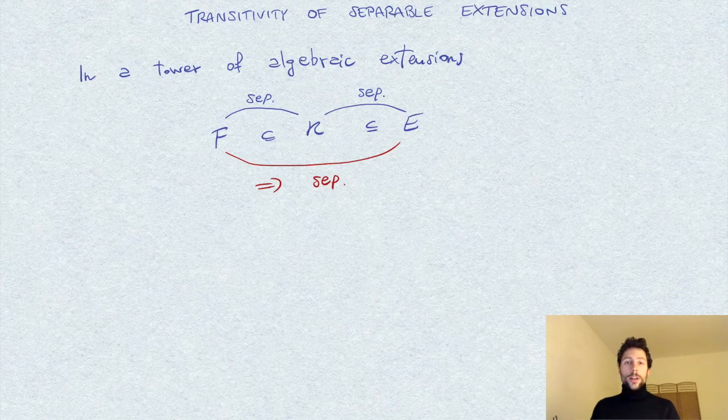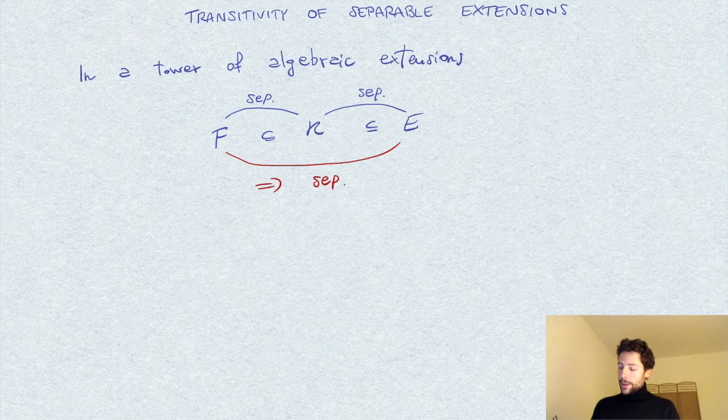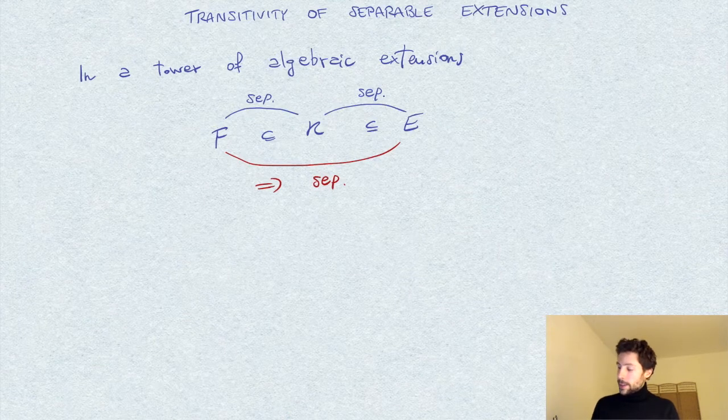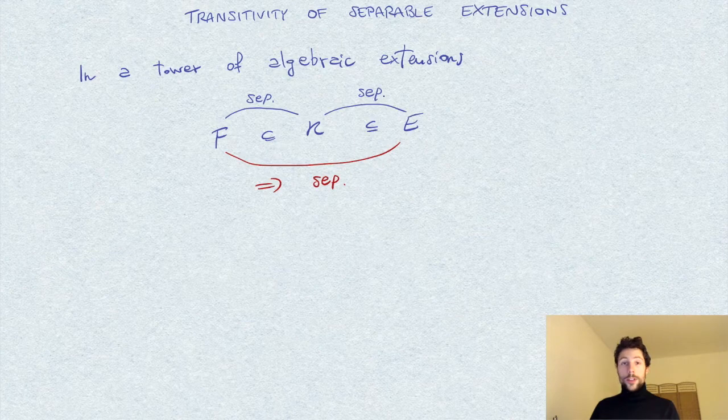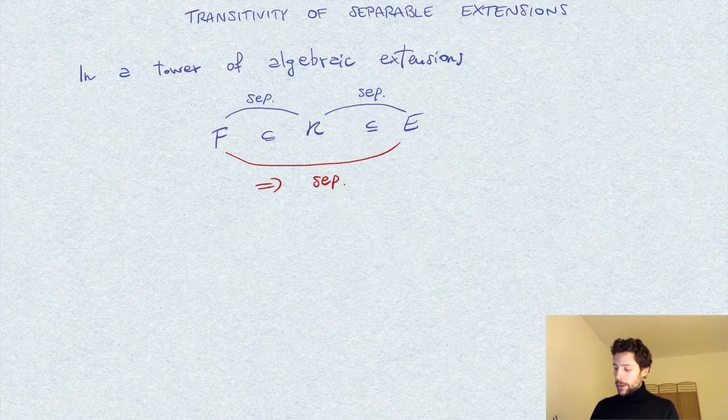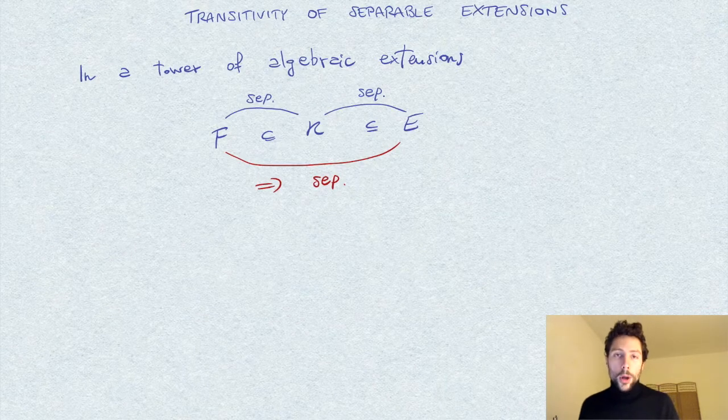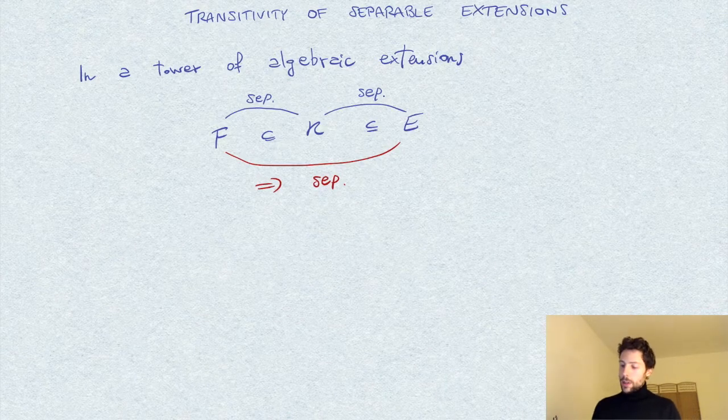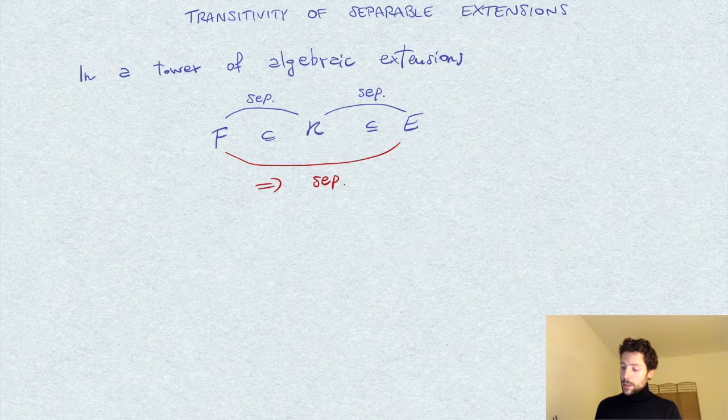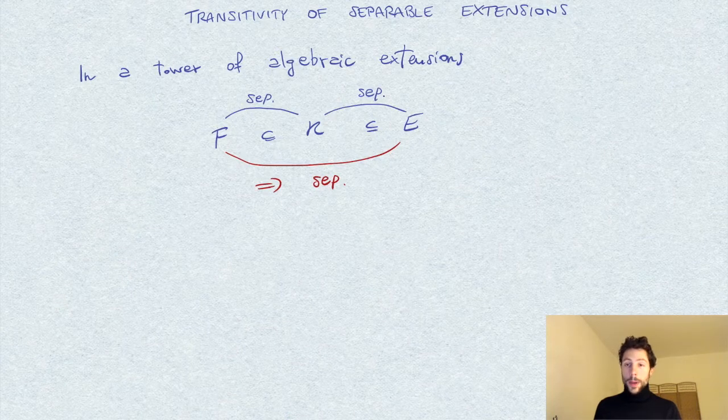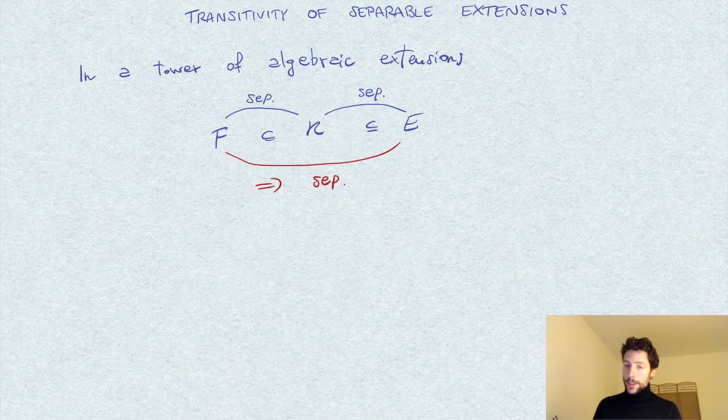Of course, we can remark that in characteristic zero this would be obvious since all algebraic extensions are separable. However, it is really a statement about positive characteristics. But we treat it abstractly so we don't need anything special about positive characteristics.